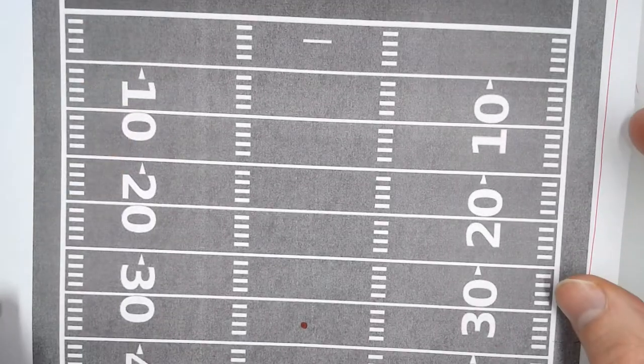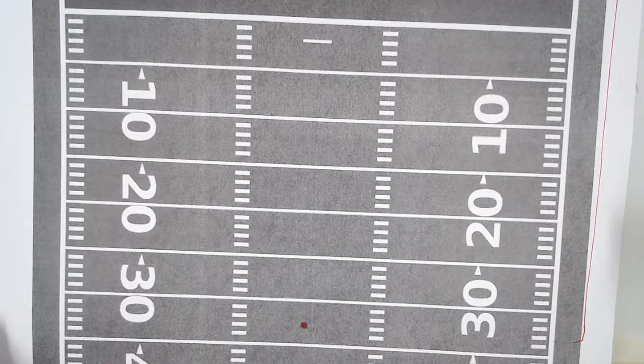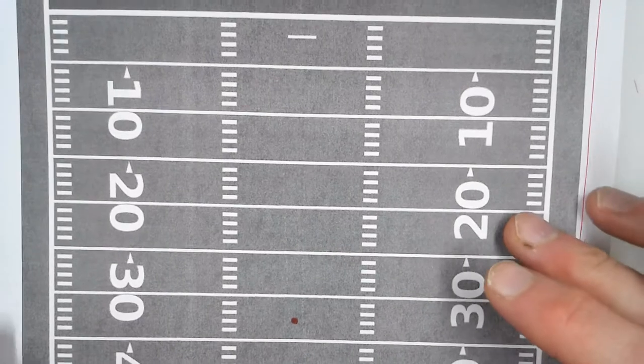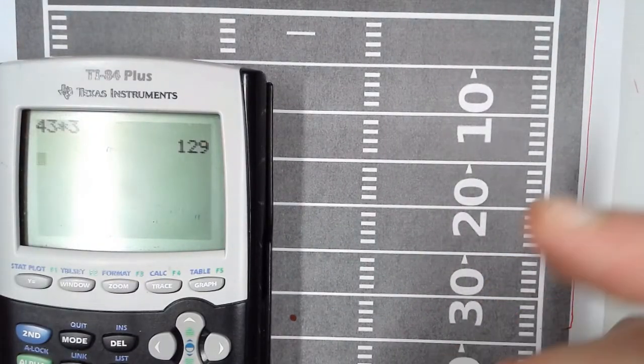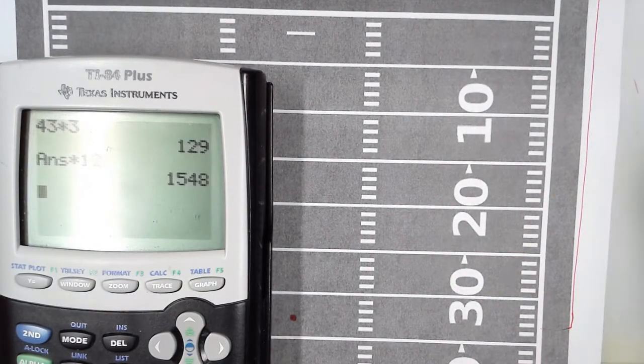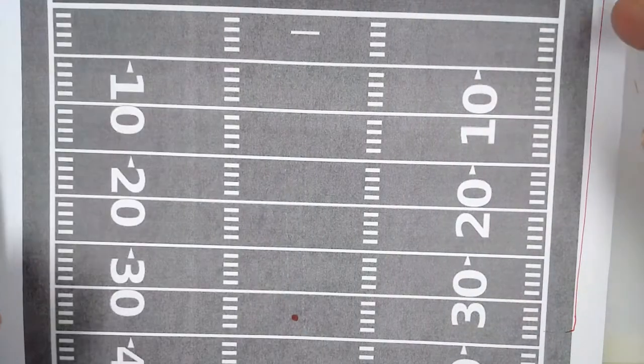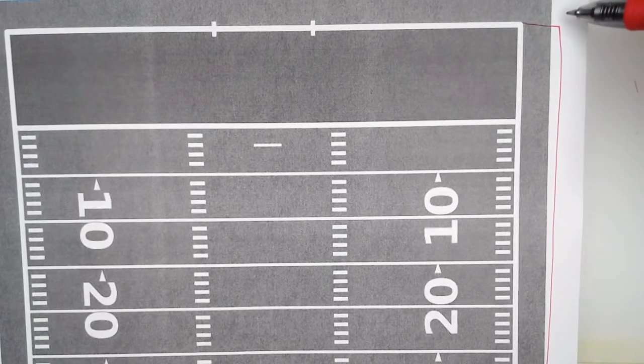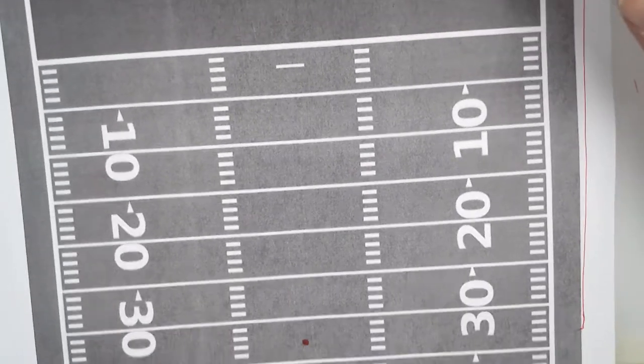So 43 yards times 3 is 129 feet times 12 inches is 1,548 inches. So that's the length from where the ball is kicked to the end zone.